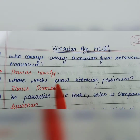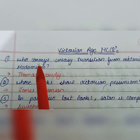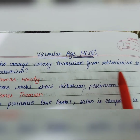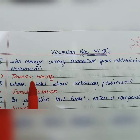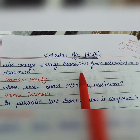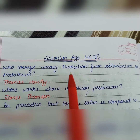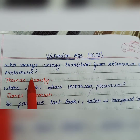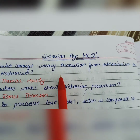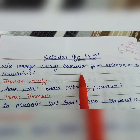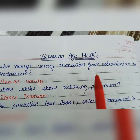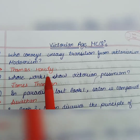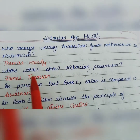Our first question related to the Victorian Age: who conveys an easy transition from Victorianism to Modernism? It is actually an uneasy transition — it is difficult to transit from the Victorian Age to Modernism. So that is Thomas Hardy.